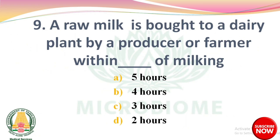Question 8: Raw milk is brought to a dairy plant by a producer or farmer within a dash of milking — options: 5 hours, 4 hours, 3 hours, 2 hours. The right answer: option B, 4 hours.